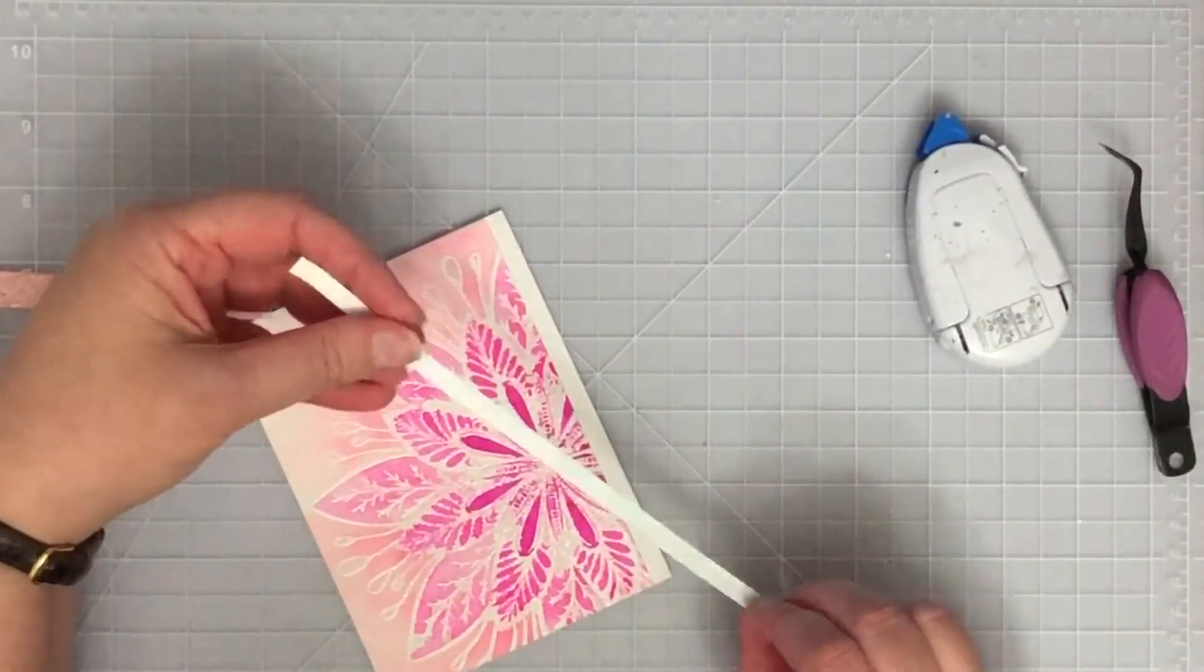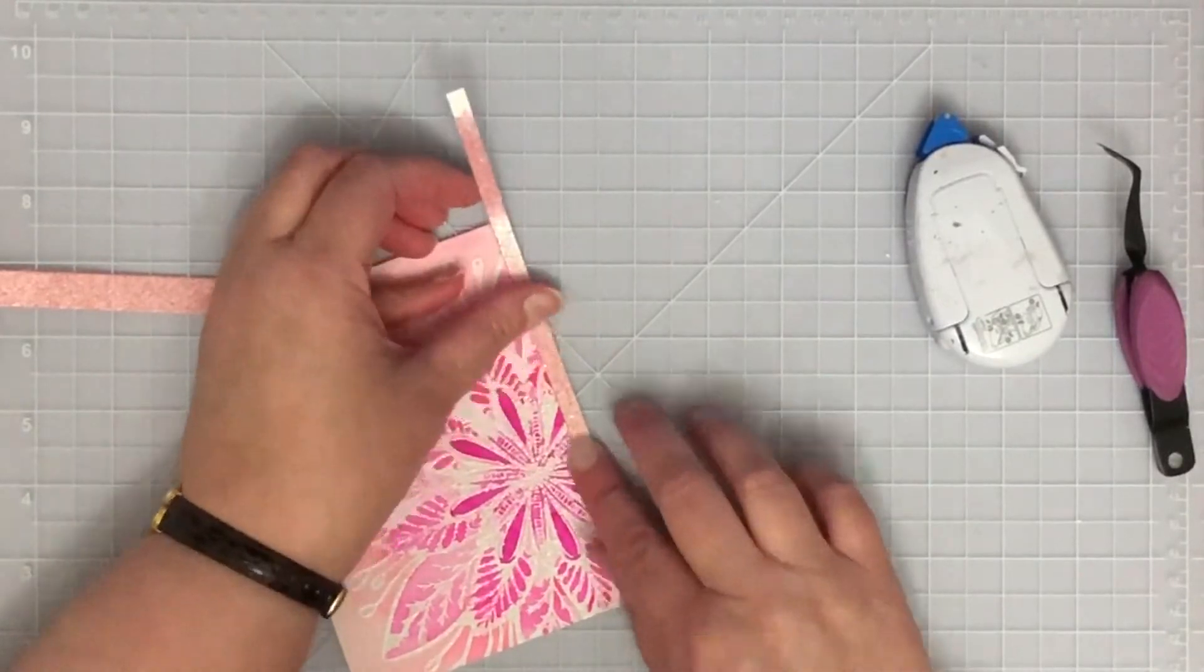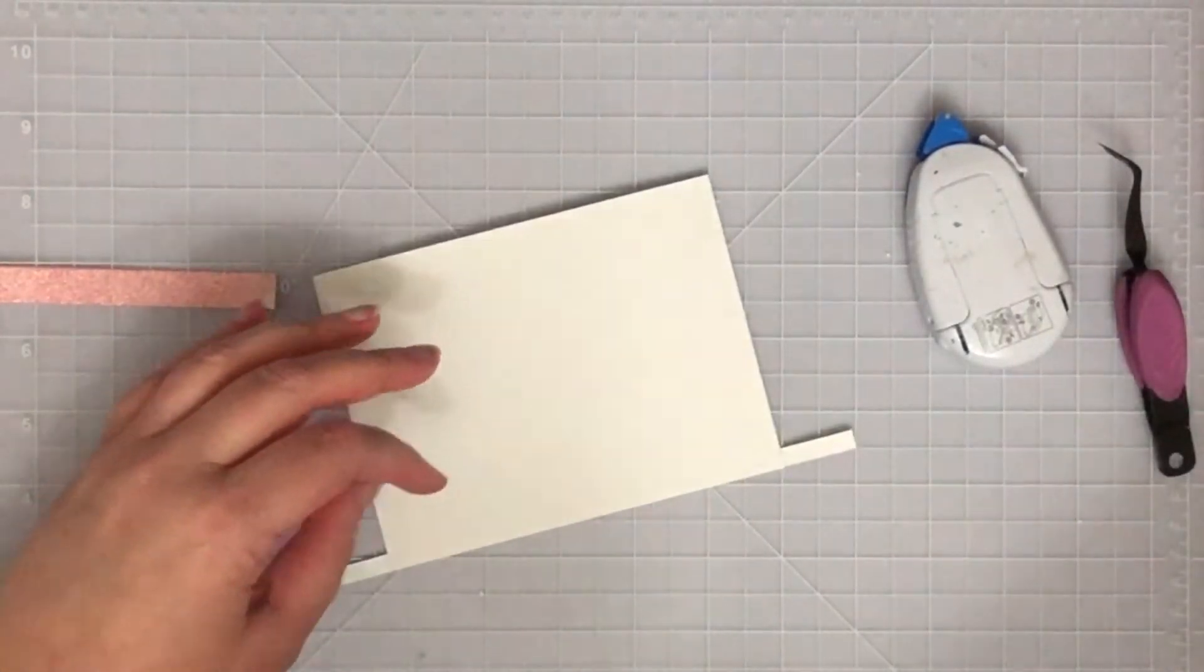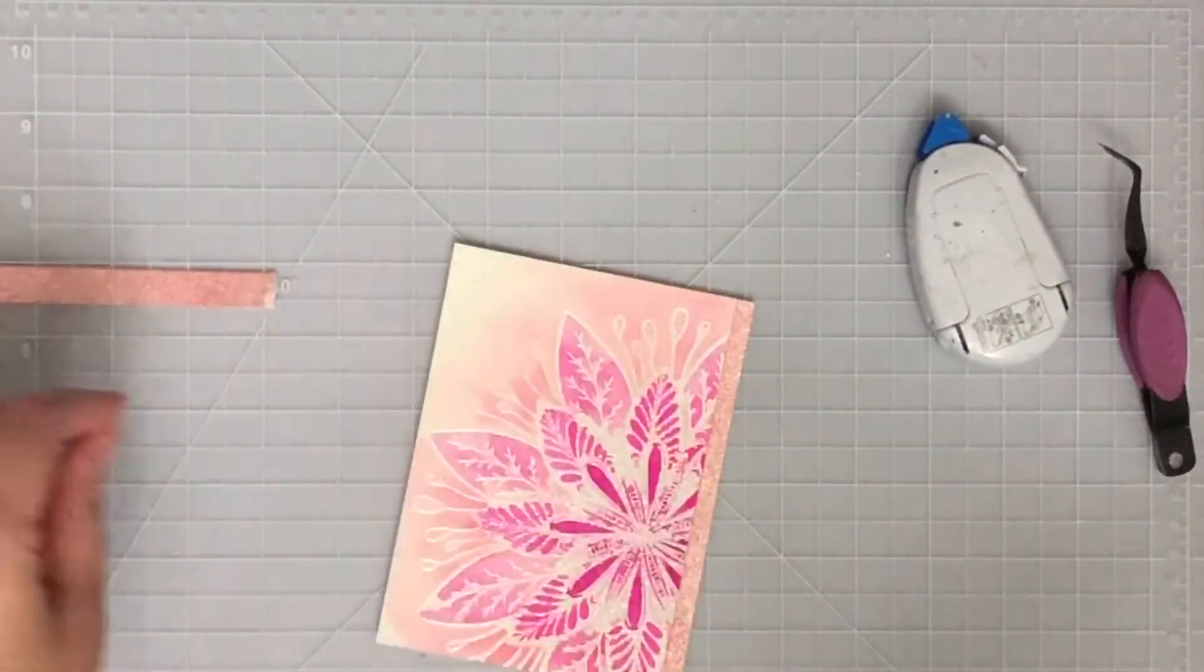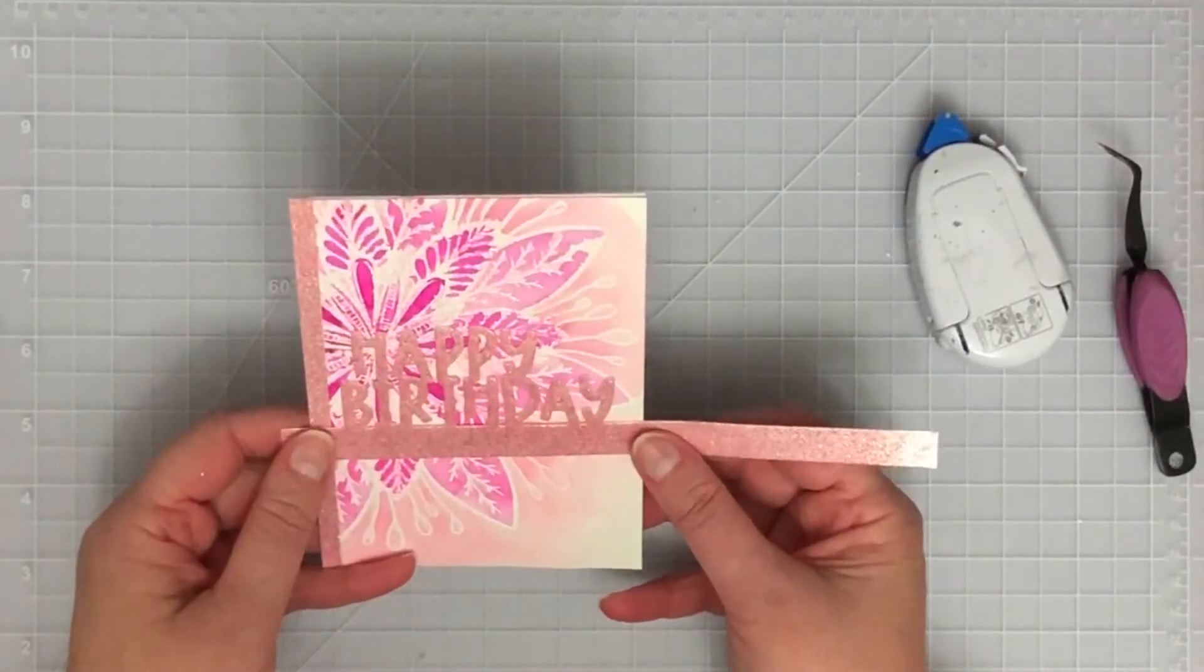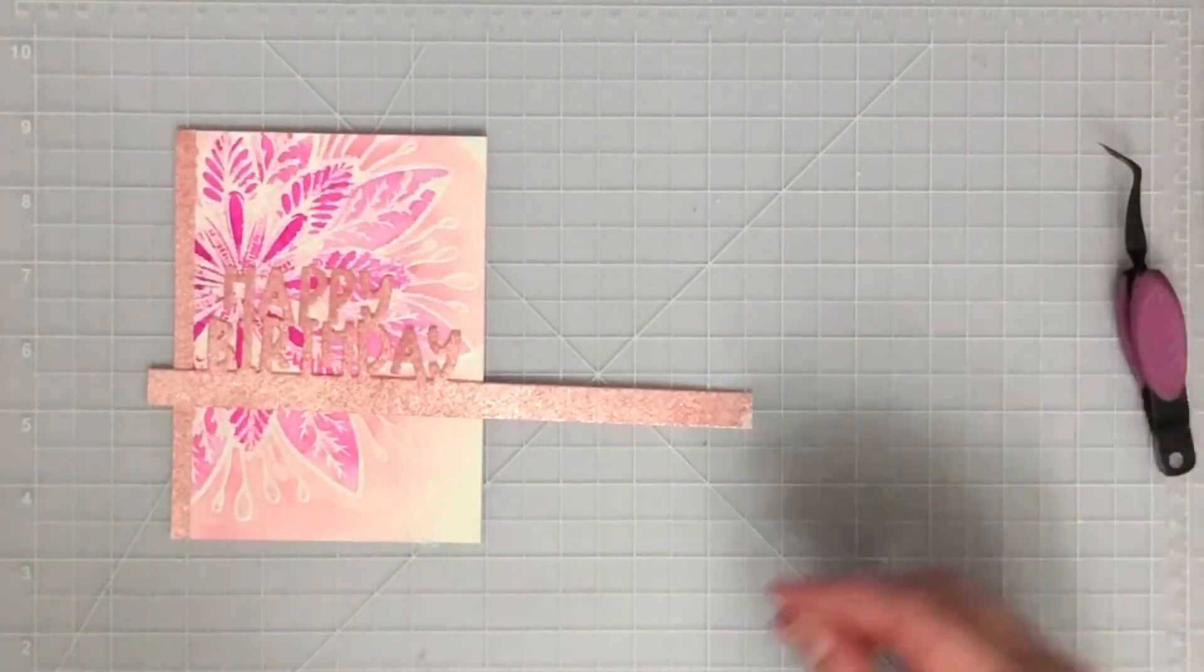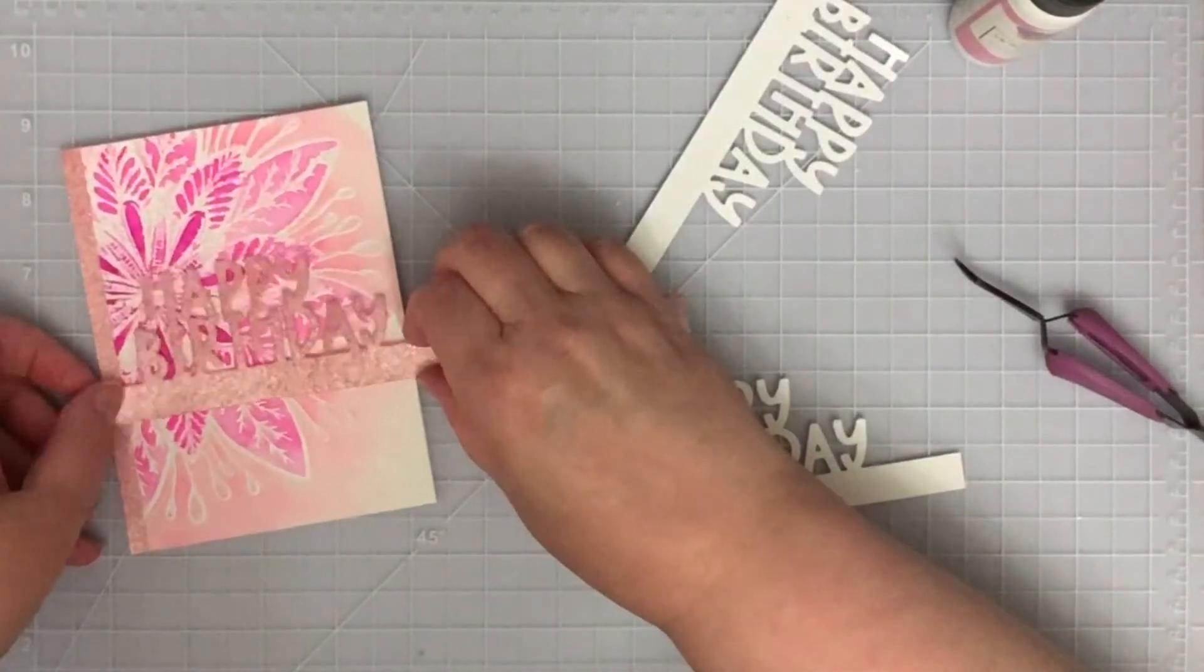My little strip of Paper Glitz can go on the left-hand side and provides a visual anchor for the image so it doesn't look like it's floating in space. Sometimes I like things to look like they're floating in space, but not today. Besides, I was trying to make a card very much the same as the Christmas card I showed you at the beginning.